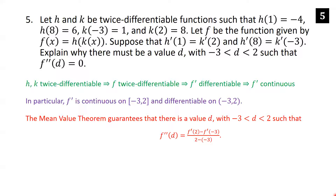The Mean Value Theorem guarantees a value d between -3 and 2 such that f''(d) equals f'(2) minus f'(-3) over 2 minus (-3). We apply the MVT to the derivative of f, since f' is continuous and differentiable where needed, giving us information about the second derivative in terms of the first.